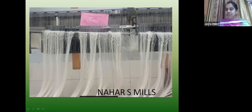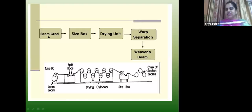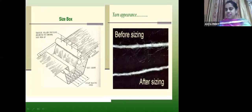The sizing process: the creel is passed through the size box. After that there are drawing units where the yarn is separated. It is made into a weaver's beam. There are section beams — the warp ends are removed from the size box and passed through drying cylinders, after which the weaver's beam is formed. Before sizing, the yarn has hairiness; after sizing, hairiness is reduced because the wax and lubricant cause the fibers to adhere and provide strength.